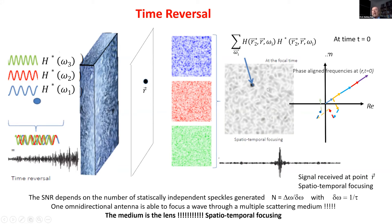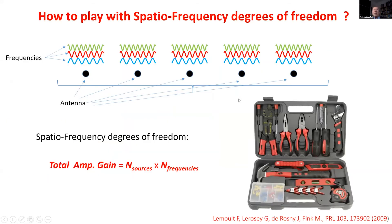This works best with very broadband signals and a random medium. Combined with many antennas you get both spatial diversity and frequency diversity. With 10 antennas and 8 uncorrelated frequencies, you have 80 degrees of freedom — and you can play with all of them to improve communication through a complex medium.